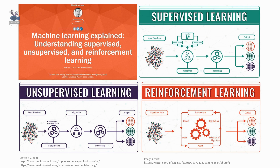Supervised learning is classified into two categories of algorithms. First is classification: a classification problem is when the output variable is a category, such as red or blue, or disease and no disease. The second is regression: a regression problem is when the output variable is a real value, such as dollars or weight.